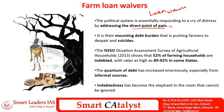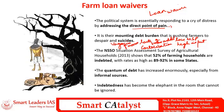Rather than focusing on the disease, the states are now focusing on the symptom. The disease is agricultural distress, caused by low MSP, high input costs, lack of value addition, cartelization in markets, and vagaries of the monsoon. All these causal factors lead to agri distress, which is diagnosed as the indebtedness of farmers. Rather than addressing these root causes, the government is directly focusing on the agri indebtedness.